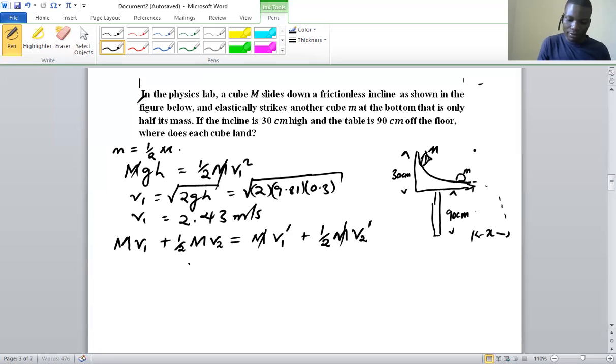So this will cancel. And then we are going to have v1 we already have 2.43. And then the small cube with mass small letter m was at rest, so its velocity is zero. So this whole part is going to give us zero. So we are going to have 2.43 being equal to v1 prime plus 0.5 v2 prime. So we have equation one like that.